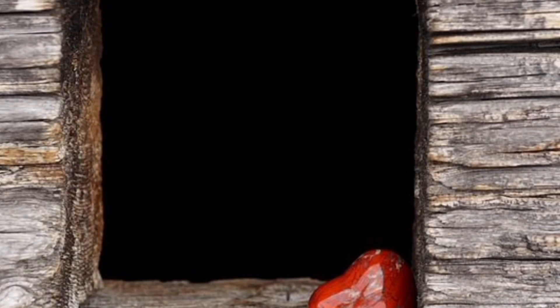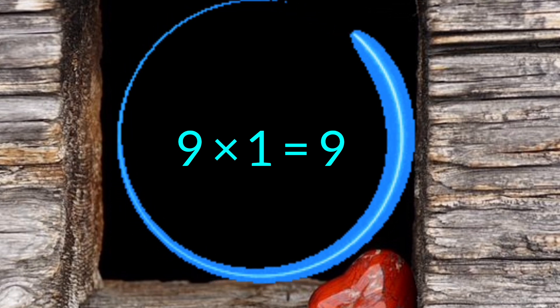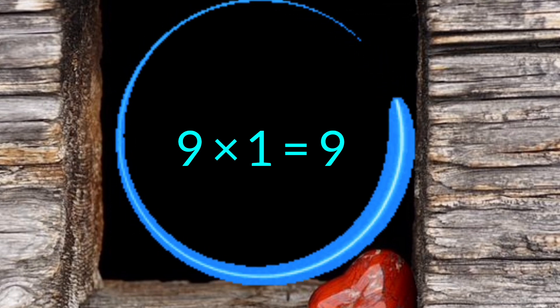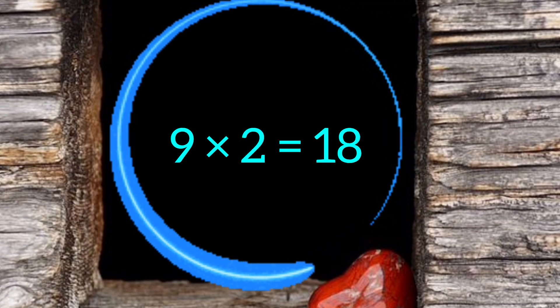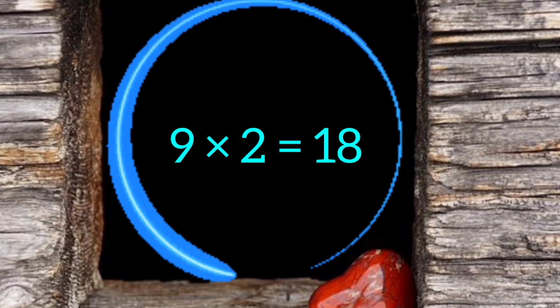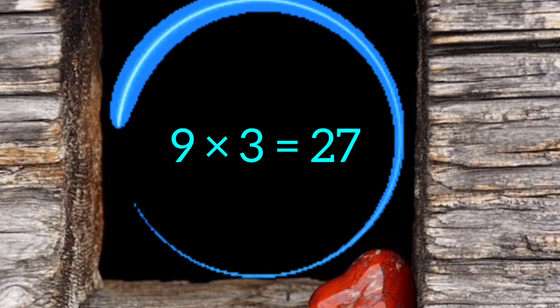Let's learn one more time. 9×1=9, 9×2=18, 9×3=27.